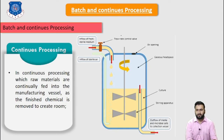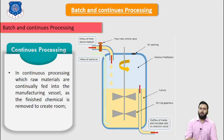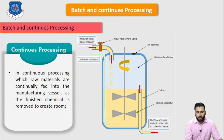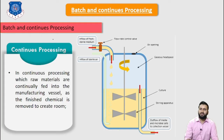Now let's discuss about continuous processing. In continuous processing, raw materials are continuously fed into the manufacturing vessel as the finished chemical is removed to create room for the reactant. We are continuously removing product to create room for the reactant. A continuous process refers to processing that involves moving a single work unit at a time between every step of the process without a break in time, substance, sequence, or extent. As the name suggests — continuous — the flow of product or material is continuous.